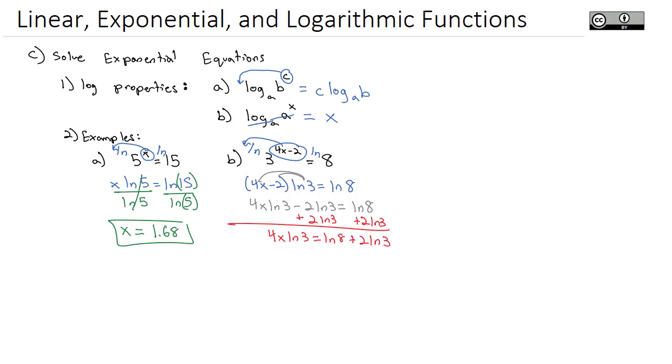They're not like terms, so I can't combine them, but we can get the x alone by dividing by what it's multiplied by, 4 times the natural log of 3 on both sides. That's just going to leave the x, and then I just have to plug this into my calculator.